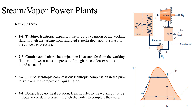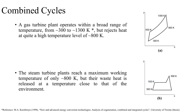We also looked at vapor power plants that operate on the basis of the Rankine cycle, where four processes take place. Process 1 to 2 is across the turbine where isentropic expansion occurs. Process 2 to 3 is across the condenser where heat rejection takes place at constant pressure. Process 3 to 4 is across the pump, which is again isentropic compression. And process 4 to 1 is across the boiler where heat addition takes place at constant pressure. Both of these cycles can be combined, and the reason is that they operate at certain temperatures.